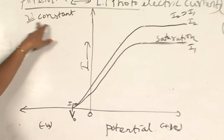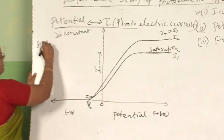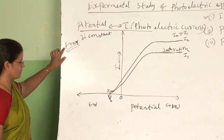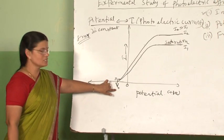Here, frequency is kept constant; we are not changing frequency at all. As long as frequency is kept constant, the stopping potential remains the same.